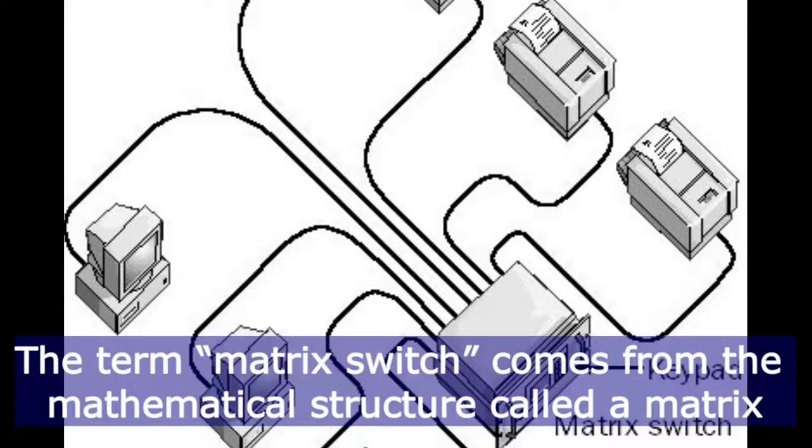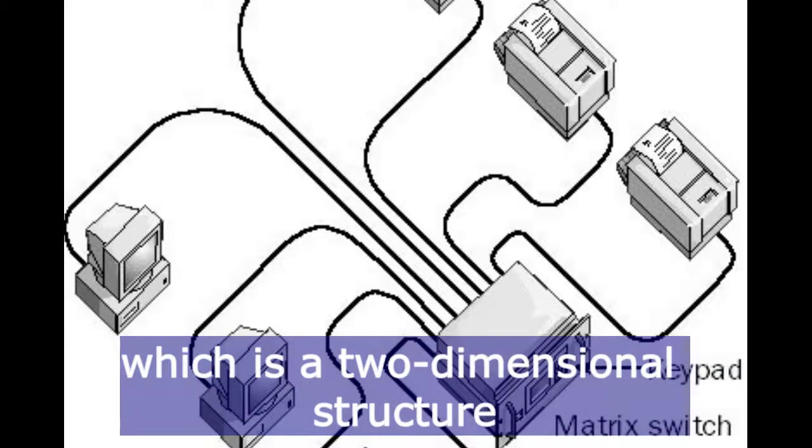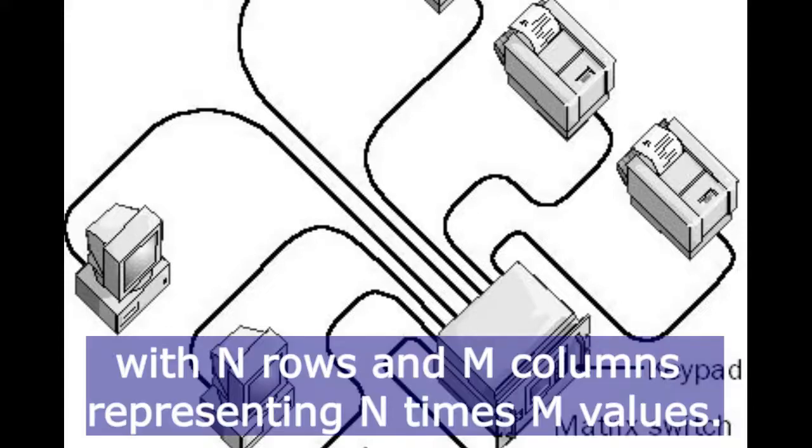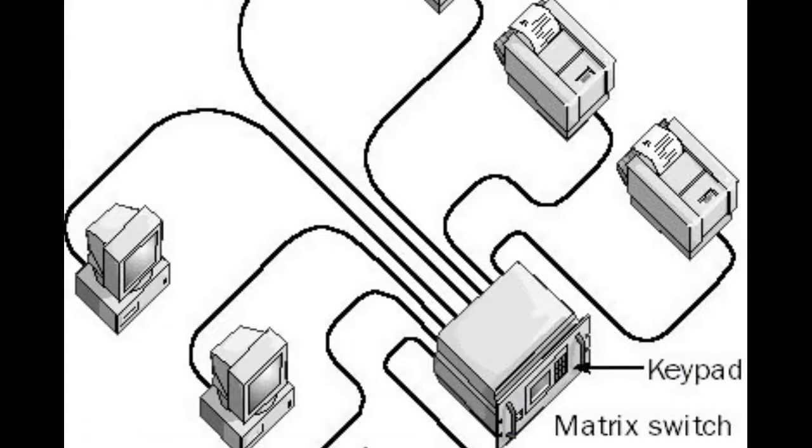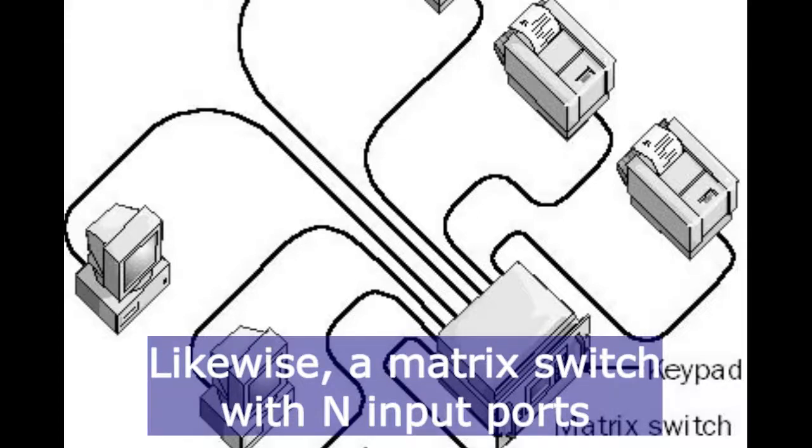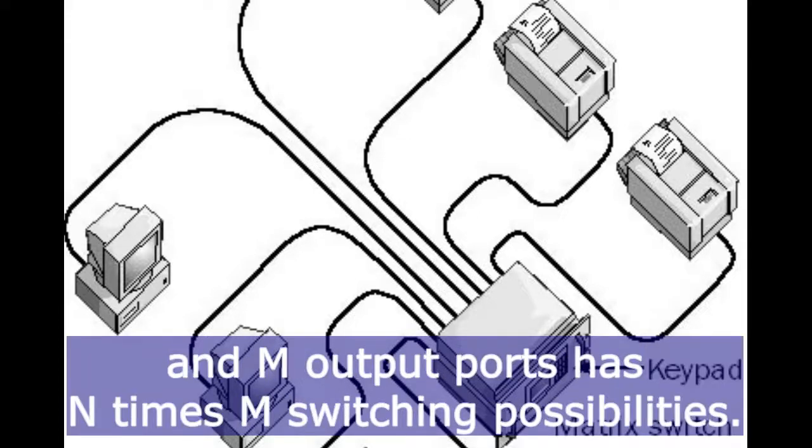The term matrix switch comes from the mathematical structure called a matrix, which is a two-dimensional structure with n rows and m columns representing n times m values. Likewise, a matrix switch with n input ports and m output ports has n times m switching possibilities.